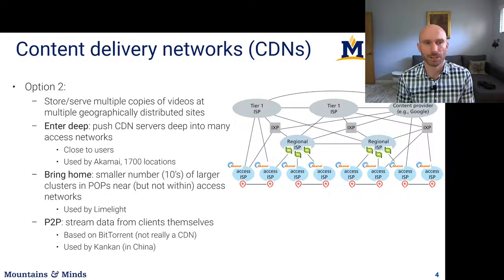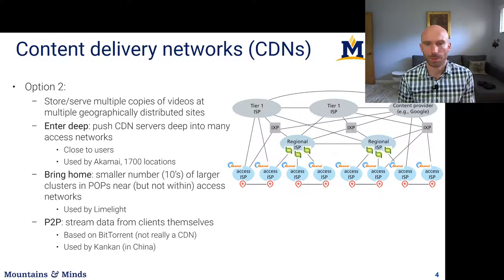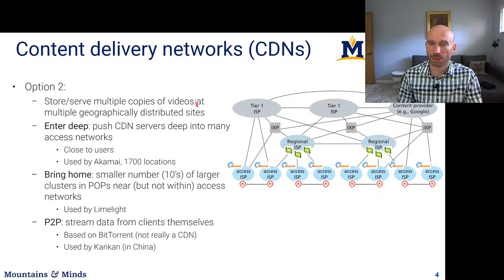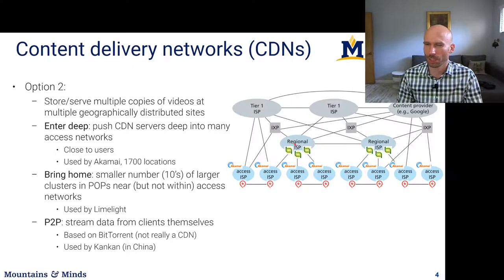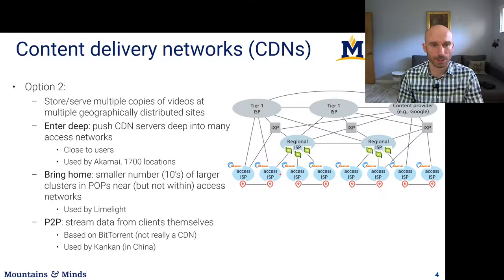This is where content delivery networks come in. CDNs are basically a set of caches distributed throughout the internet. We have tier-one ISPs, internet exchange points connecting regional ISPs, and access ISPs serving different clients — and we can look at different strategies for deploying CDN servers within this hierarchy.